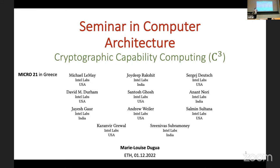We're going to continue with the second session today, as opposed to the first paper. This paper is from the past, not from the future. It was presented last year at Micro 2021, and the paper is Cryptographic Capability Computing. We have a lot of familiar names here who are close collaborators to Safari, for example, Siri and Anand.